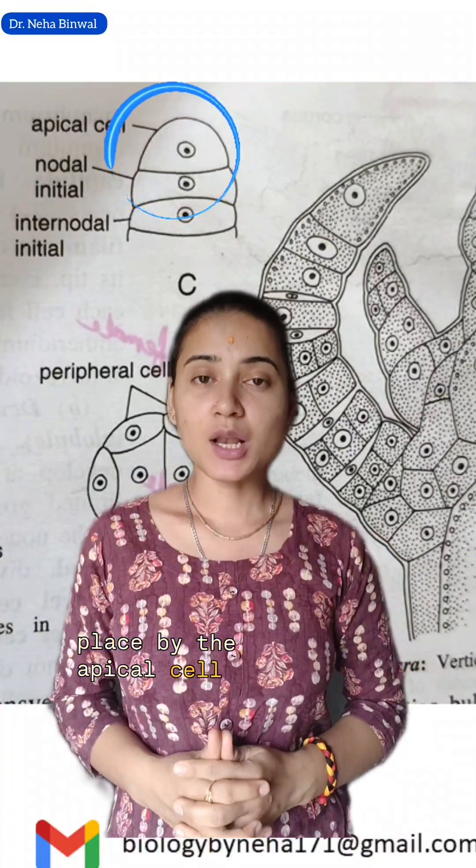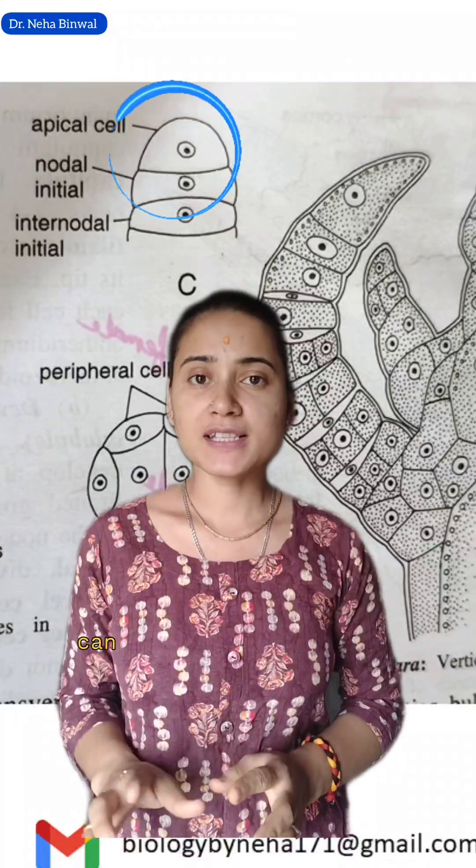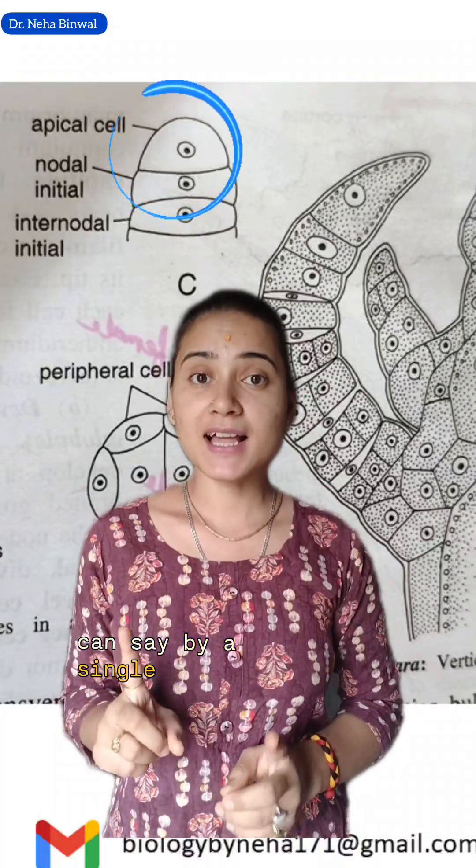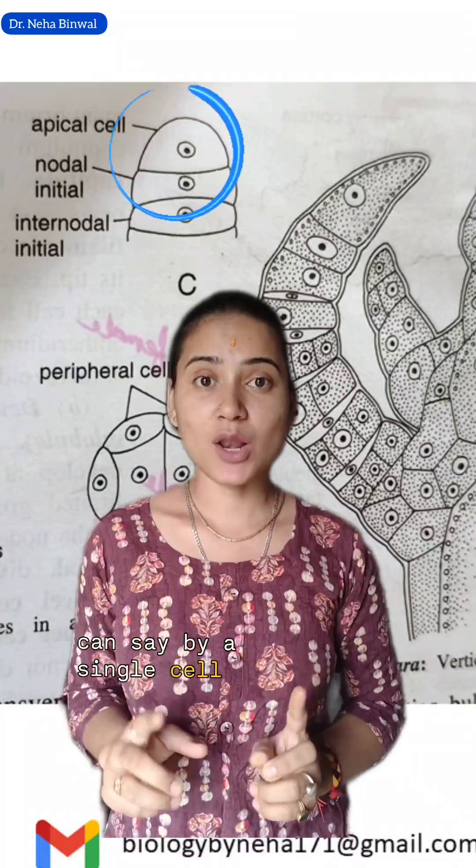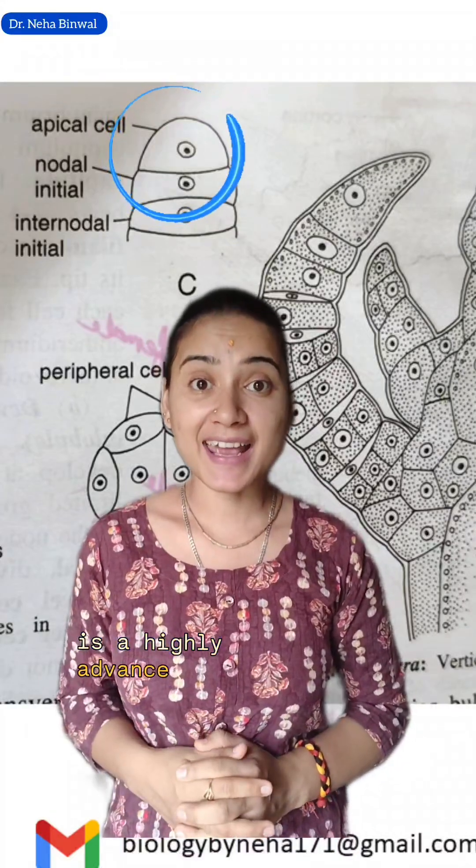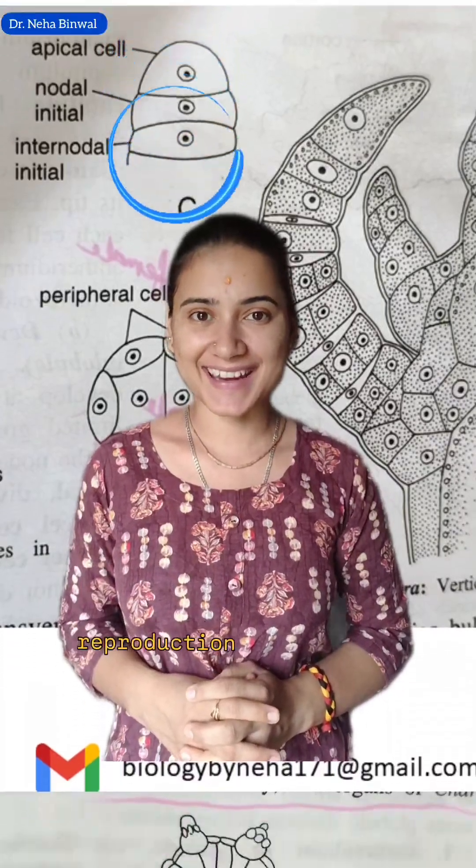Growth in Kara takes place by an apical cell, that is, by a single apical cell, which is a highly advanced character.